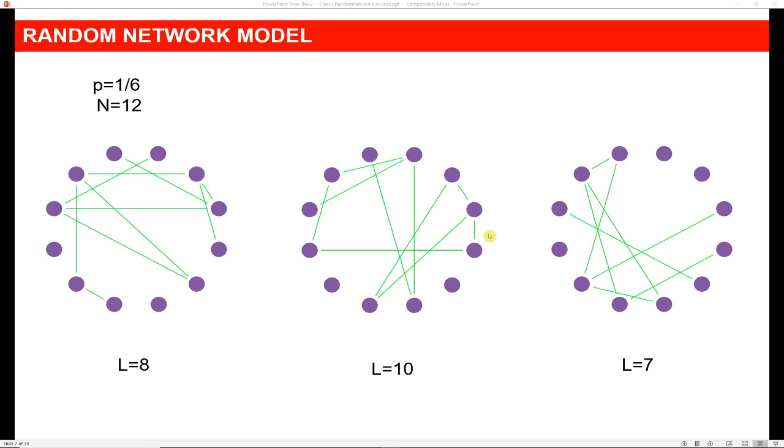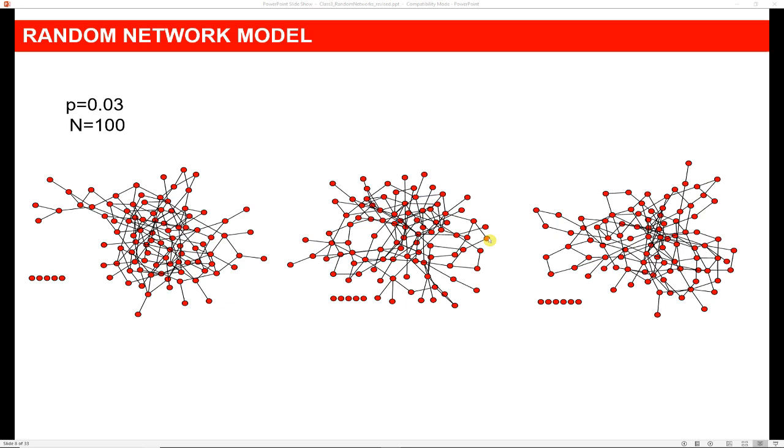And so you can see the result of having a particular number of nodes. Like here, we have different graphs of 12 nodes, but you see they have different numbers of links. And that's just how the probability works out. You might have different numbers of links based on what happens when you roll the dice. Here we have graphs of 100 nodes and probability of 3% that a pair will be connected. And so you can see that they're kind of sparse. Random graphs have a different shape than the real networks that we're going to look at do. And that's one of the things that we want to talk about in this chapter.